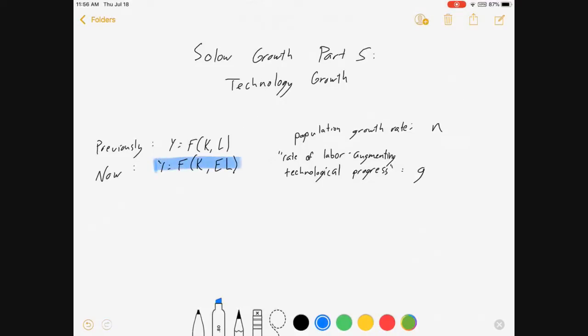And so, this is our new baby. Now, population growth rate is still in. And we have a rate of labor augmenting technological progress. It's our technology growth rate, g.